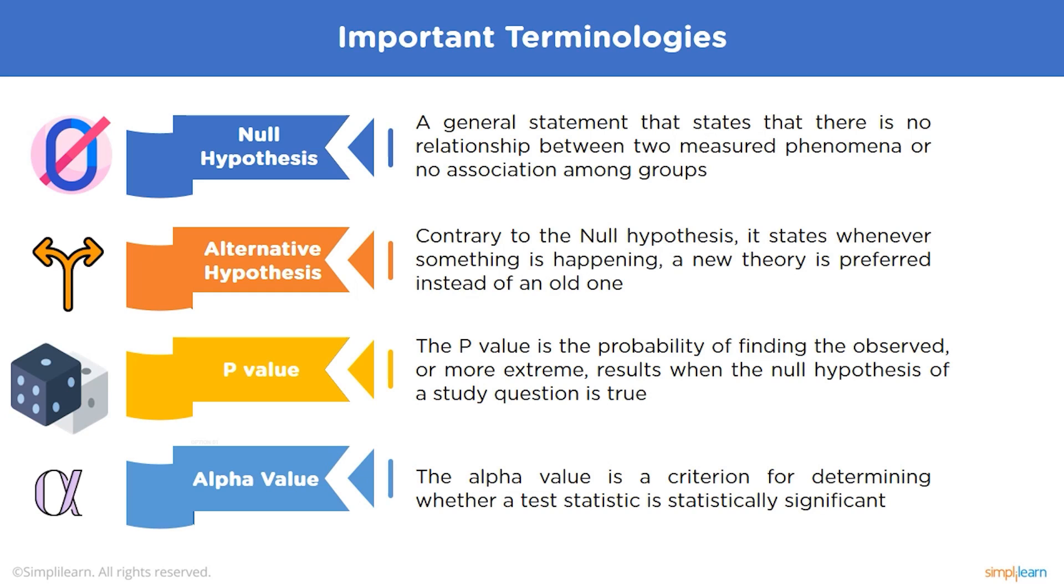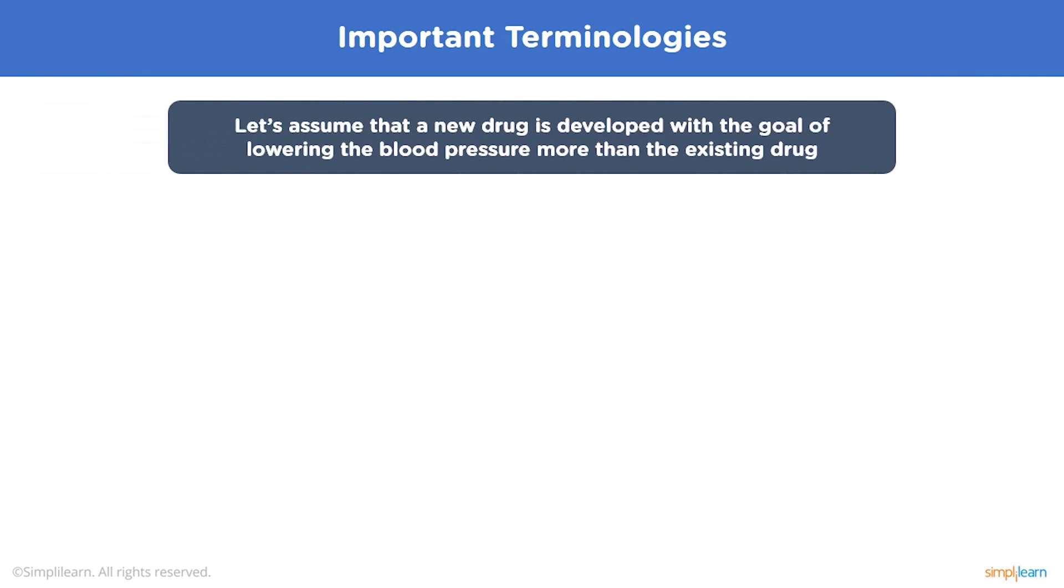Now let's move on to alpha value. The alpha value is the criteria for determining whether the test statistics is statistically significant or not. This test provides a p-value which is the probability of observing results as extreme as those in the data, assuming the results are truly due to chance alone. An alpha value of 5% or lower is often considered to be statistically significant.